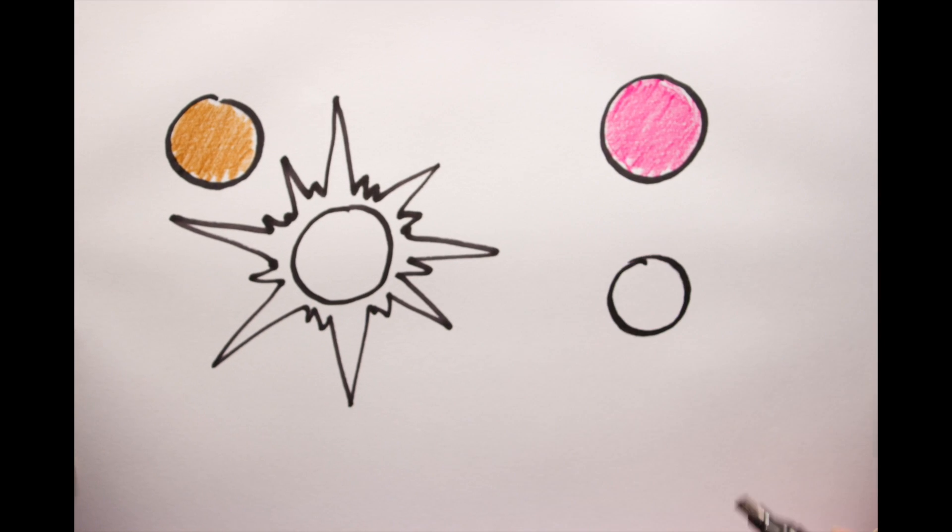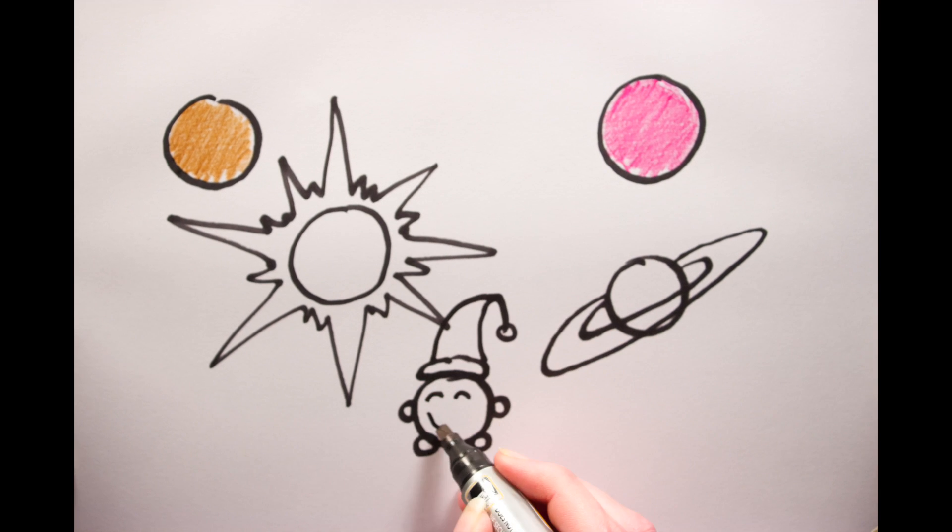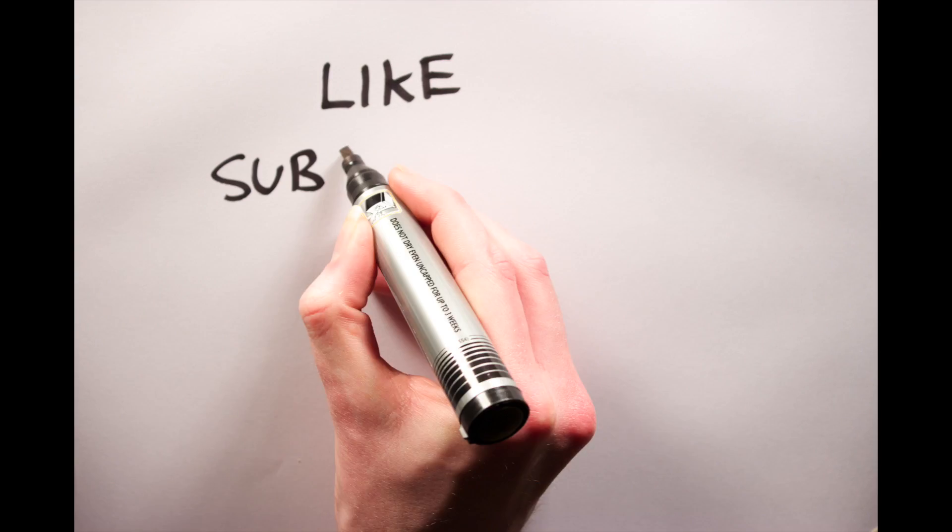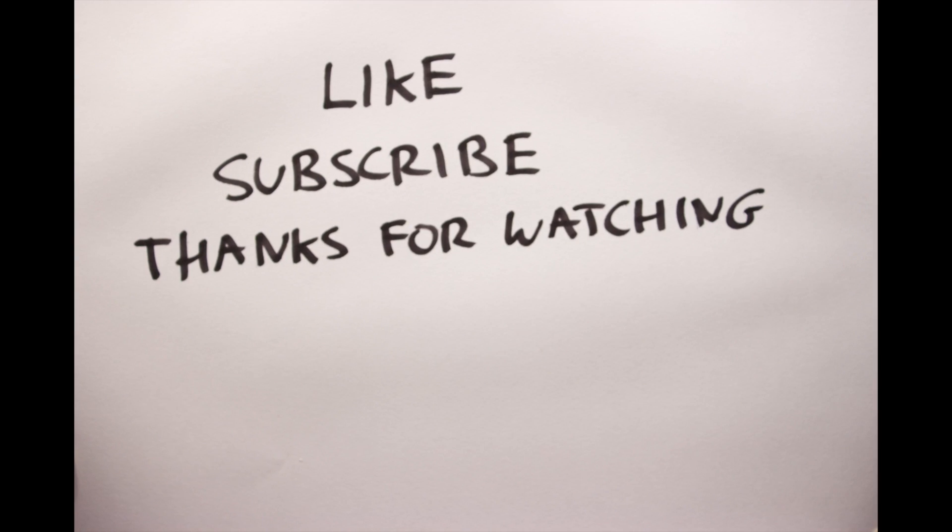So there you have it, the life cycle of browny, purpley, starry, planet-y, dwarf-y type things. Guys, like and subscribe. Thank you so much for watching, never change, and I will see you next time. Edgar out.